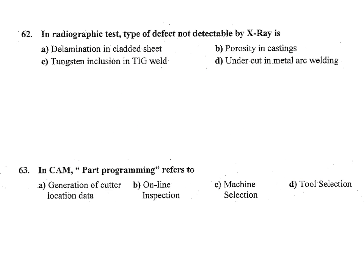In radiographic test, type of defect not detectable by x-rays. We are using x-ray gamma ray for radiographic test. X-ray porosity in casting, that we can detect. Undercut in metal arc welding, that also we can detect. Tungsten inclusion in TIG welding, that also we can detect. But delamination in cladded sheet, you cannot detect this one, so answer is A, not detectable.